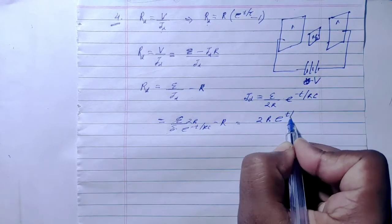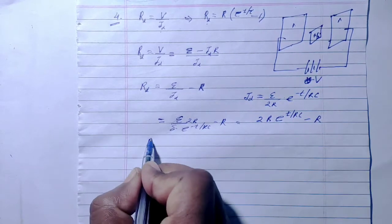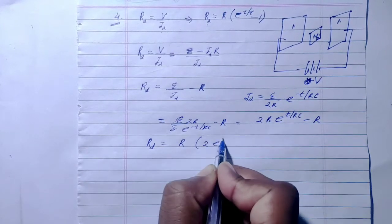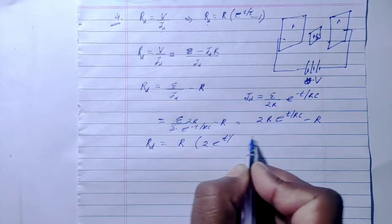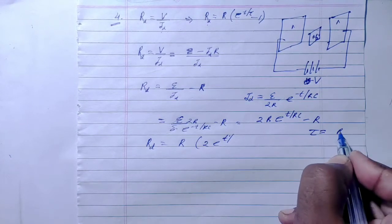We get 2 times e^(t/RC). Since RC is the time constant τ, we can write this as R(2e^(t/τ) - 1).